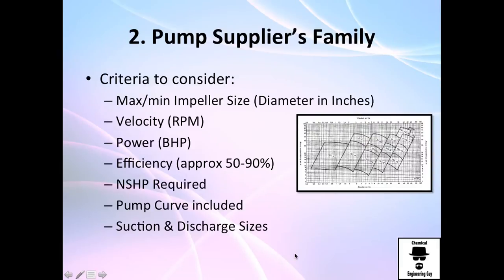What do we need to consider? The maximum and minimum impeller size, the velocity at which the pump can operate with typical values from 1750 to 3500, the power requirements, the efficiency including normal and best efficiencies, and NPSH requirements.